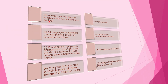Cholinergic neurons are neurons which secrete acetylcholine at their nerve endings. Examples include: all preganglionic autonomic endings (parasympathetic as well as sympathetic), postganglionic parasympathetic endings, postganglionic sympathetic endings innervating sweat glands, skeletal muscle blood vessels (sympathetic vasodilator), the neuromuscular junction, many parts of the brain especially the cerebral cortex, thalamus and forebrain nuclei, and endings of some amacrine cells present in the retina.